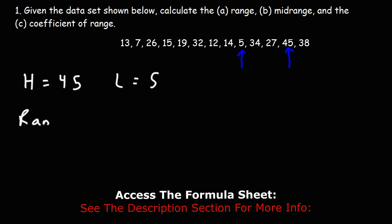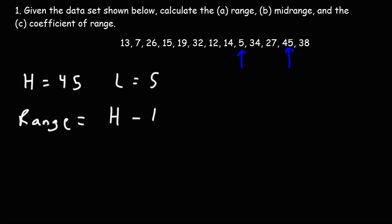The range is going to be the difference between the highest number and the lowest number. So it's 45 minus 5, which is 40.